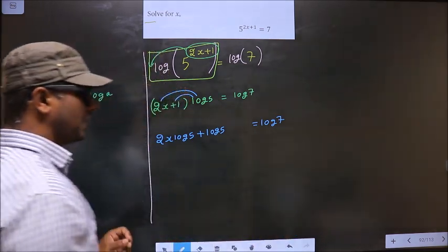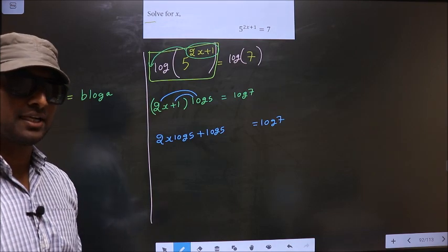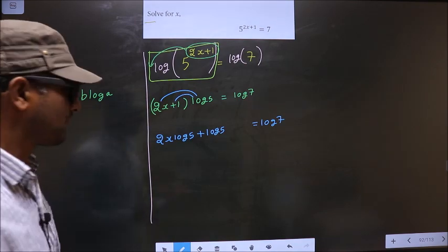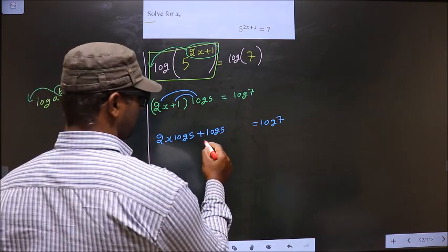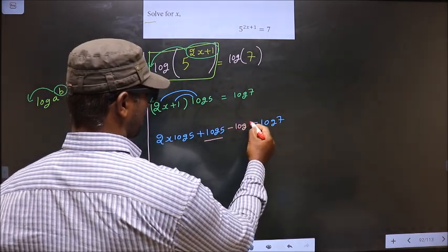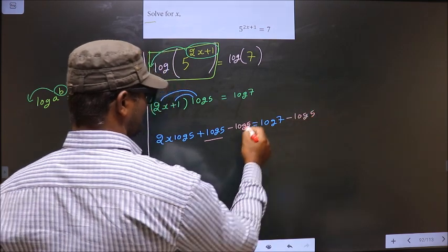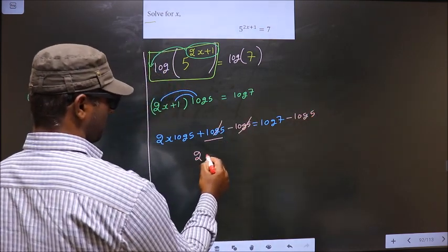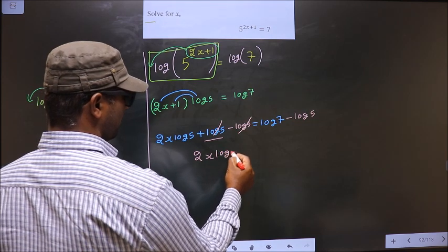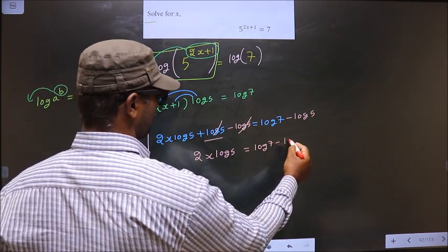Now, to get x, we should make x the subject. For that, remove all the connections connected to it. First, you should remove +log 5. To remove +log 5, you subtract log 5 on both sides. Now, this cancels out. You get 2x log 5 = log 7 - log 5.